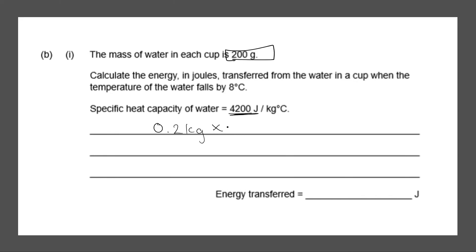Okay, so let's type this into our calculator. 0.2 multiplied by 4200 multiplied by 8. This would give us an answer of 6720 joules. We can convert that, where you don't need to, 6.72 kilojoules.